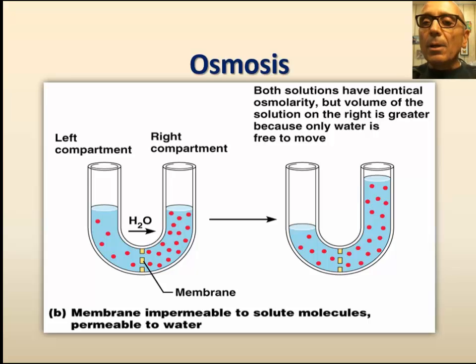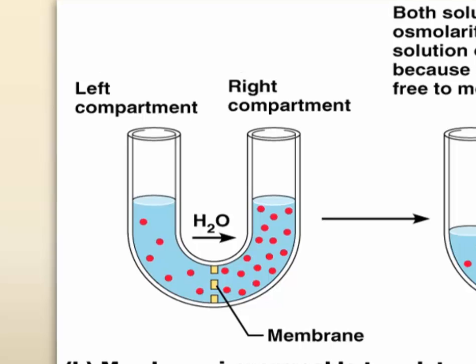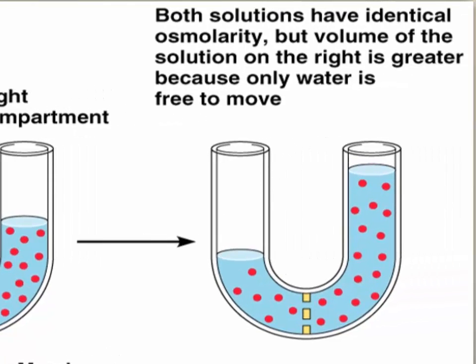In the second scenario, we have the same setup, except this time the membrane is only permeable to water, but not glucose. With time, water molecules diffuse across the membrane toward the solution with the lower water concentration. In other words, water diffuses from the area of low solute concentration to the area of higher solute concentration. The steady state is reached when the osmolarity is the same on both sides of the membrane.